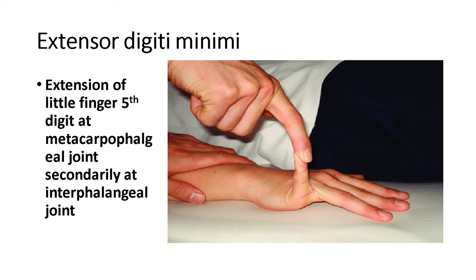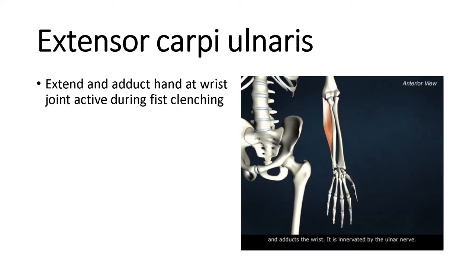The action of extensor digiti minimi is that it causes extension of the little finger — the fifth digit — at the metacarpophalangeal joint. This is the phalanx and this is the metacarpal at the metacarpophalangeal joint, and also at the interphalangeal joint.